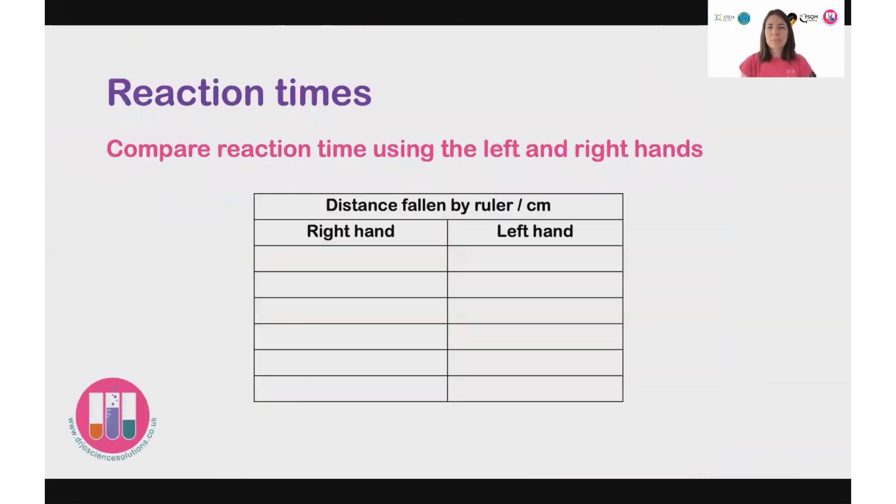So a handy table like this might be useful. So you've got your right hand and your left hand, and you're measuring the distance that the ruler has fallen before you've caught it. And we can use that to translate it into your reaction times.